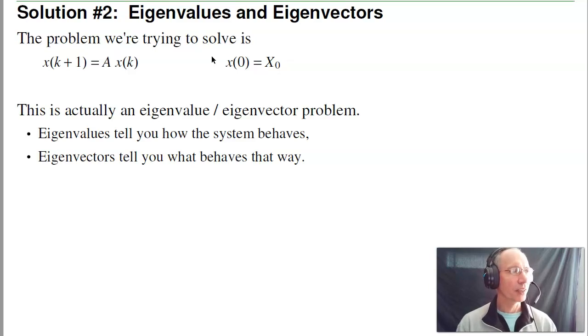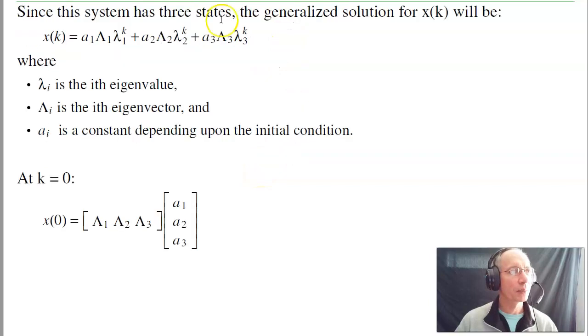Second solution: eigenvalues, eigenvectors. The problem we're trying to solve is X of k plus one is A times X of k, given an initial condition. That's actually an eigenvalue, eigenvector problem. Eigenvalues tell you how a system behaves. Eigenvectors tell you what behaves that way. The general solution will always be in this form: some constant times the first eigenvector times the eigenvalue to the k, plus another constant times the second eigenvector times the eigenvalue to the k. This is the general solution for any initial condition.